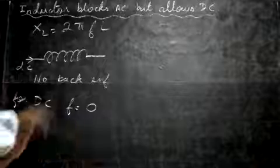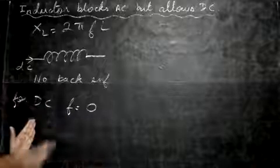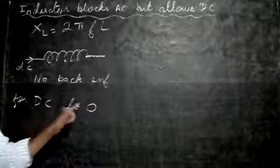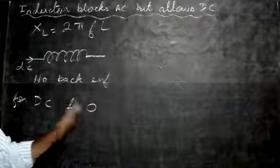See, frequency means waves - number of oscillations per second. There is no oscillation here, so frequency is 0. Substitute here, frequency is 0 in this equation.